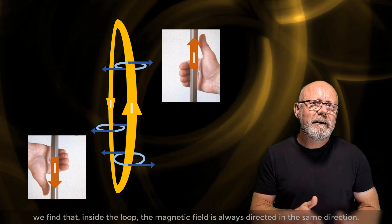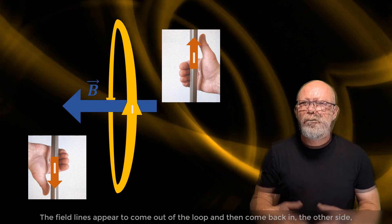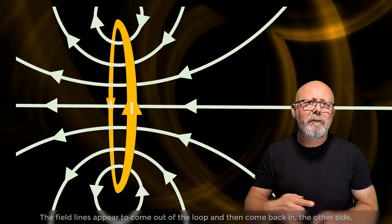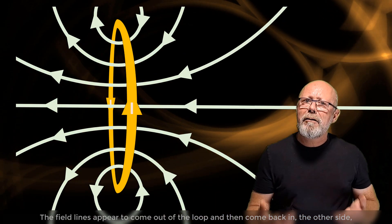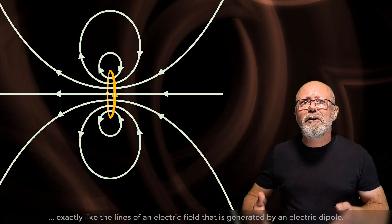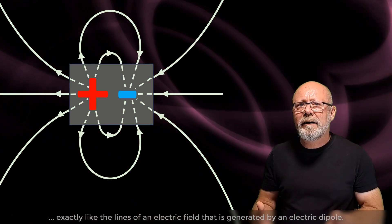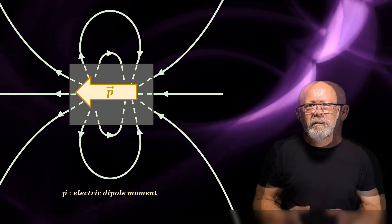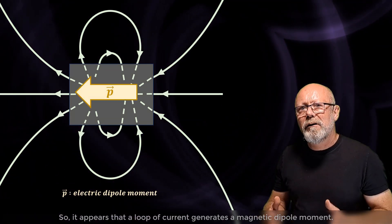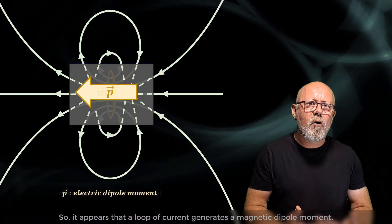The field lines appear to come out of the loop and then come back in, the other side. Exactly like the lines of an electric field that is generated by an electric dipole. So it appears that the loop of current generates a magnetic dipole moment.